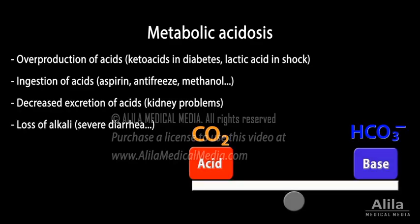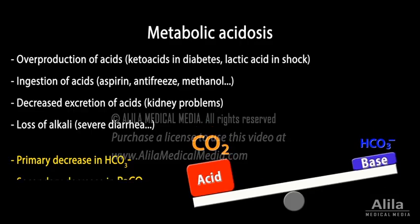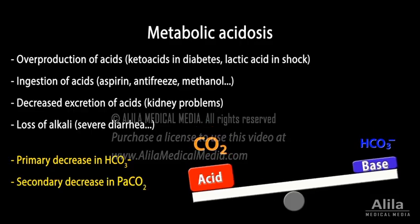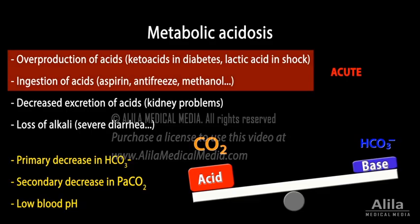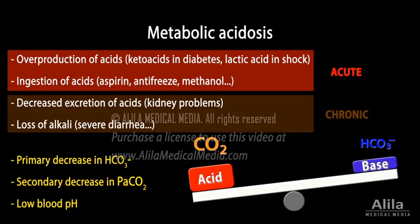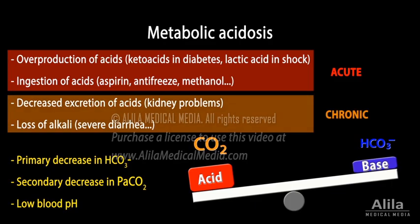Metabolic acidosis is characterized by a primary decrease in plasma bicarbonate, secondary decrease in carbon dioxide partial pressure, and a low blood pH. Acute forms most frequently result from overproduction of metabolic acids, such as ketoacids or lactic acid. Chronic forms are often caused by impaired renal function or loss of bicarbonate, such as in severe diarrhea.